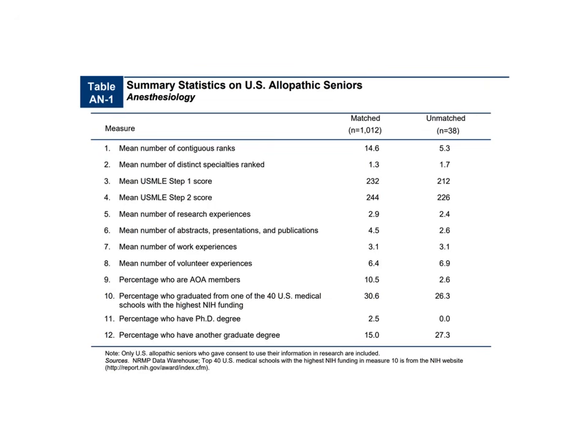The mean number of research experiences was 2.9. Mean number of abstracts, presentations, and publications was 4.5. Mean number of work experiences was 3.1. It's a little vague what exactly constitutes a research experience, but the takeaway is to get involved and do as much as you can — get as much on your CV as possible. Interestingly, mean volunteer experience was actually lower in the matched group than in the unmatched group, likely because students with weaker numbers tend to overcompensate with volunteer experience.